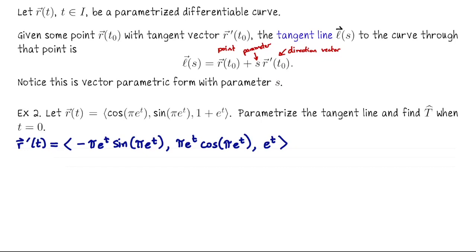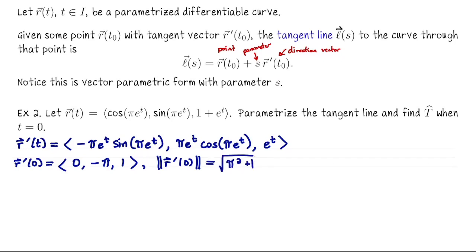Notice we're particularly interested in t = 0. Whenever you're working through these problems with one specific moment in time, you want to identify when it's safe to plug in that value. The general rule of thumb is that you don't plug in a specific value for t if you're going to take any more derivatives. Since we just needed R' and won't differentiate anymore, it's safe to substitute t = 0. Doing so, the velocity vector at zero simplifies to (0, −π, 1). The speed at t = 0 is then √(0 + π² + 1) = √(π² + 1).